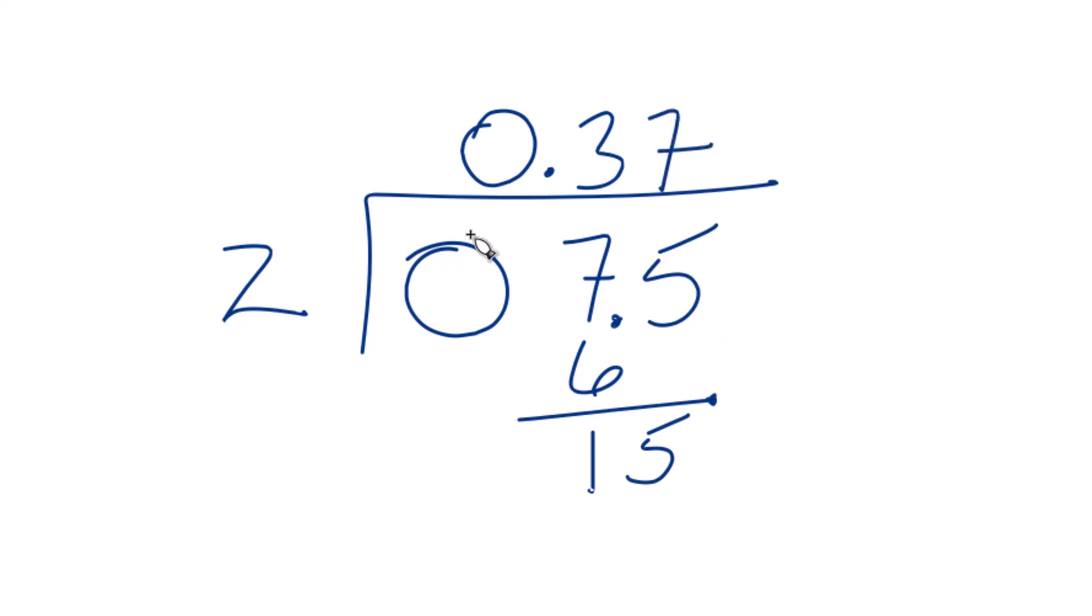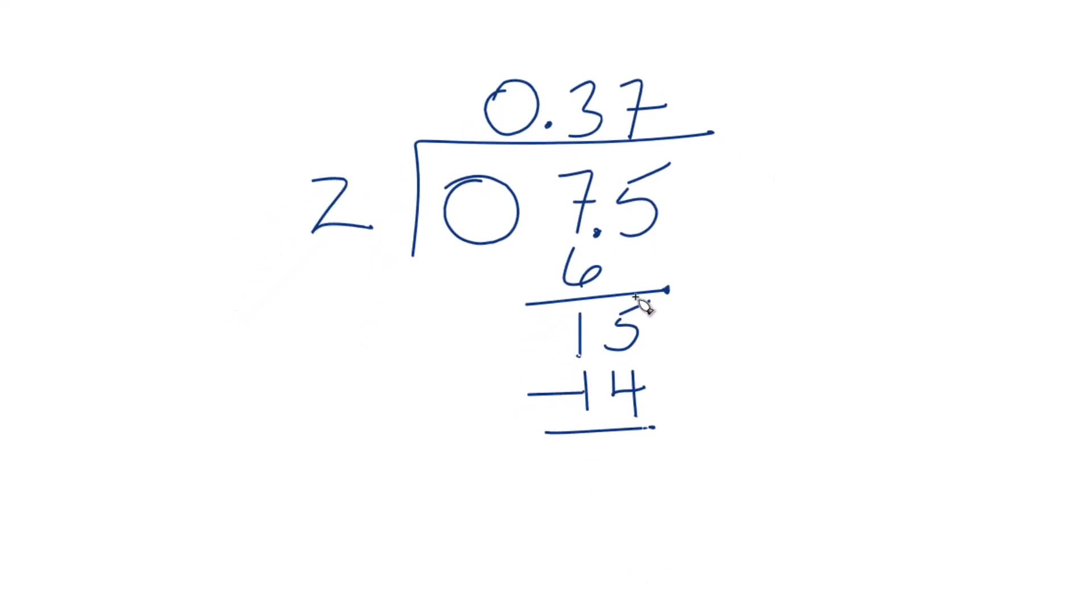How about 7? 7 times 2 is 14. We could subtract. We get 1.